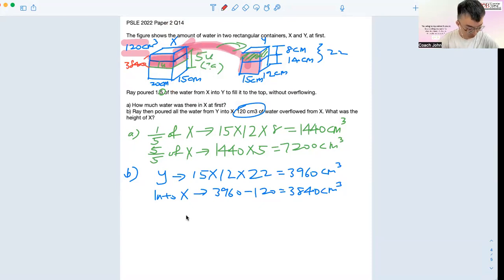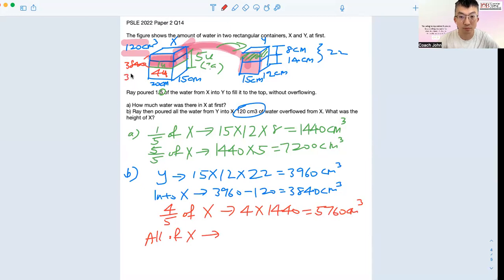Take note that you also have to add four-fifths of X because you have to add the 4 units here. Four units will be four out of five of X at first, which is 4 times 1440 equals 5760. The area of X is actually your 3840 plus your 5760, which is your total volume, which equals 9600 cubic cm. To find the height of X, you have to take 9600 divided by the base area, which is 20 and 15 after you multiply them, which is a total of 32 cm. This is the height of X.